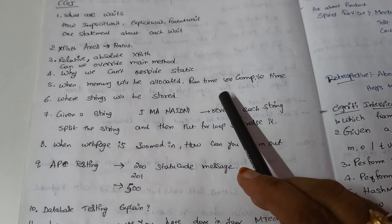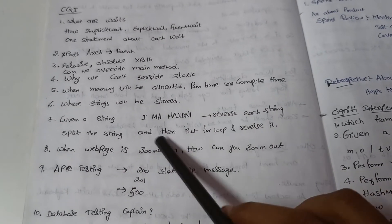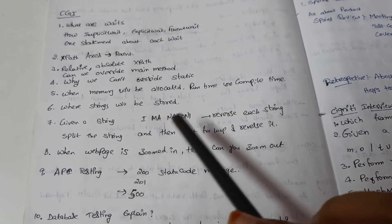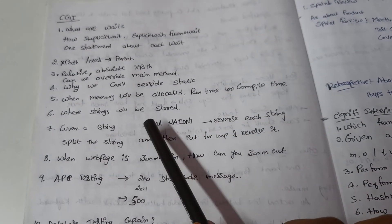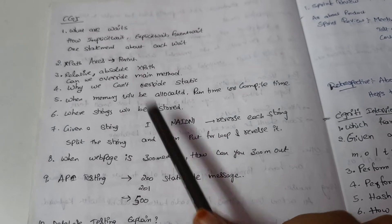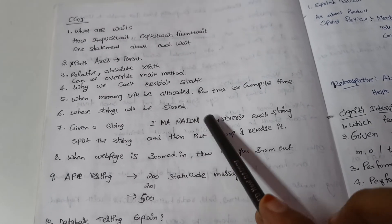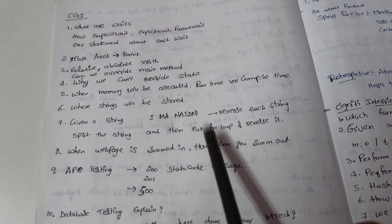Each word in the string should be reversed, so I should be here, MA should be changed as AM, and it should be changed as Indian. So this is the program I have to write in Java.